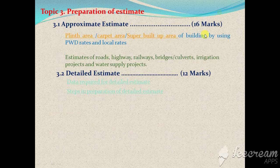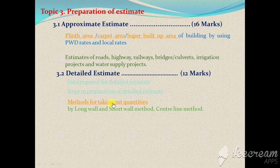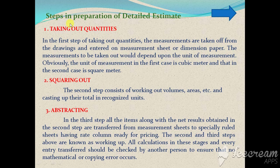Now we will look at the methods for taking out quantities. There are three steps involved: taking out quantities, squaring out, and abstracting. For taking out quantities, there are two different methodologies, particularly for load-bearing structures, which is what we are focusing on.